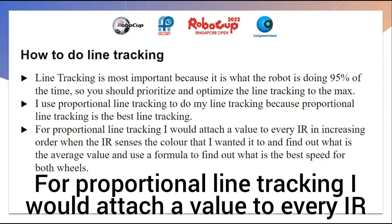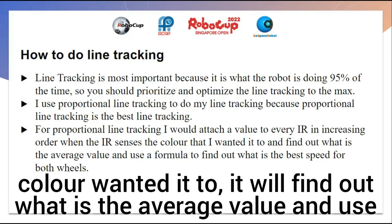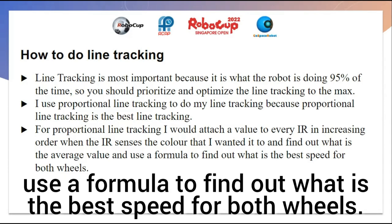For proportional line tracking, I attach a value to every IR sensor in increasing order. When the IR sensor senses the color that I want it to, it finds out what the average value is and uses a formula to find out what the best speed is for both wheels.